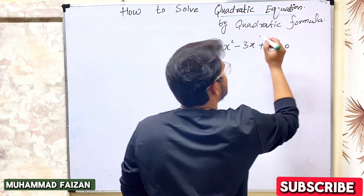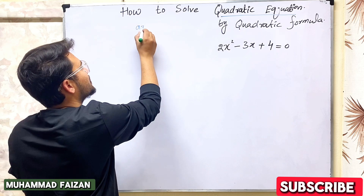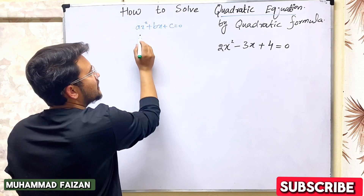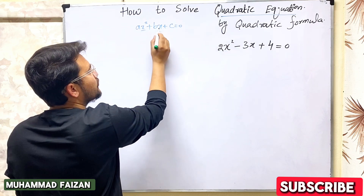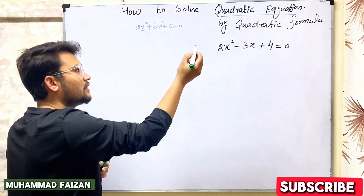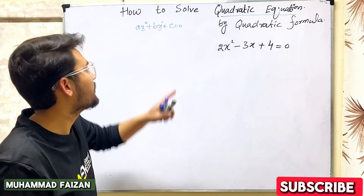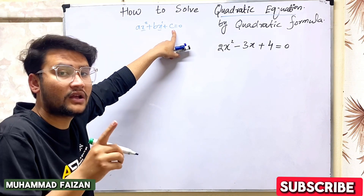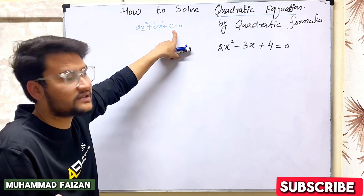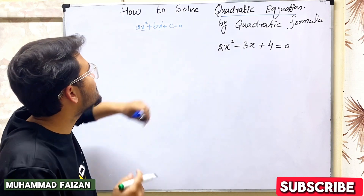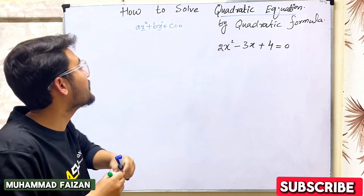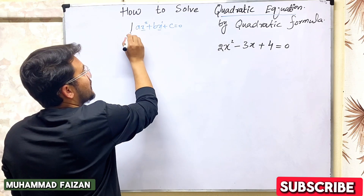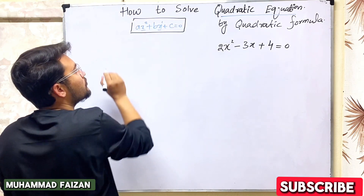A quadratic equation is always in the form ax squared plus bx plus c is equal to zero. This means the variable has a squared term, a linear term, and a constant term. This is the standard form of the quadratic equation.